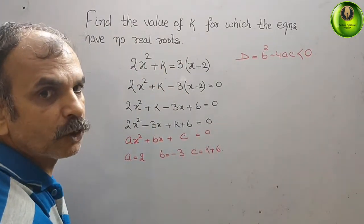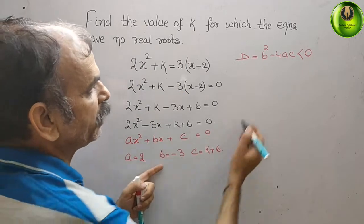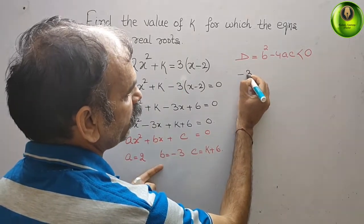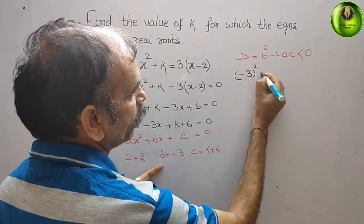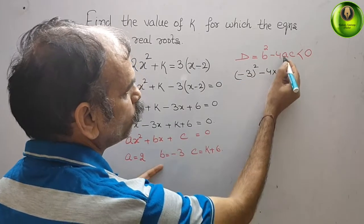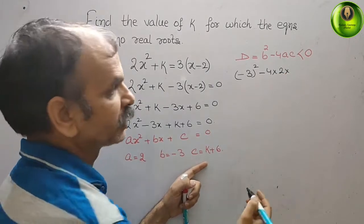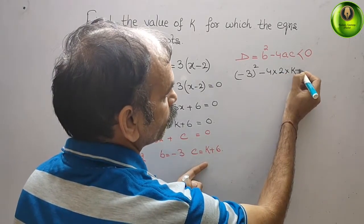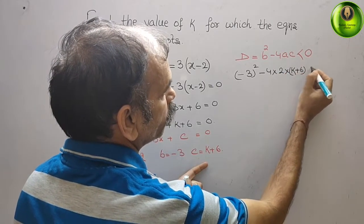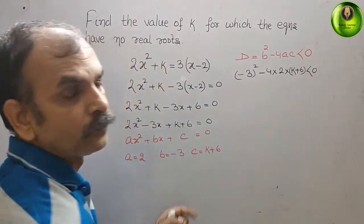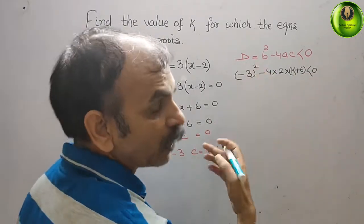Substitute these values in b² - 4ac: (-3)² - 4(2)(k + 6) < 0. (-3)² is 9.